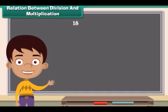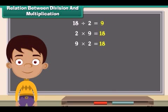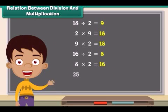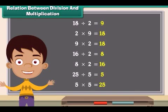Friends, 18 divided by 2 is 9. And if we multiply this 2 and 9 we get 18. 2 multiply by 9 is 18. 16 divided by 2 is 8, and 2 multiplied by 8 is 16. Similarly 25 divided by 5 is 5, and 5 multiplied by 5 is 25.